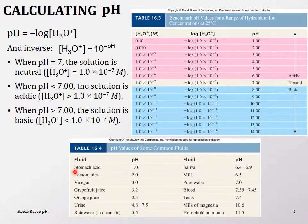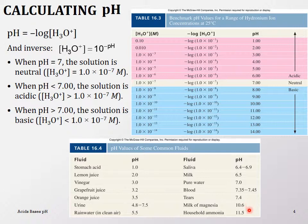Table 16.4 gives the pHs of some common fluids. Stomach acid is pH 1 — very strong, needed to digest everything. Lemon juice is 2, vinegar is 3, and so on going higher. Blood is slightly basic, not acidic or neutral. Milk of magnesia and ammonia are strong bases.